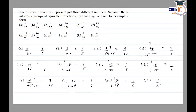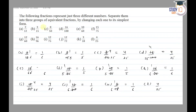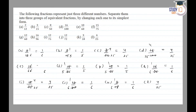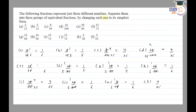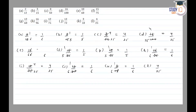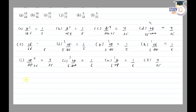So the following fractions represent just three different numbers. Separating them into three groups of equivalent fractions by changing each one to its simplest form, we get three groups: 1/6, 1/5, and 4/25.